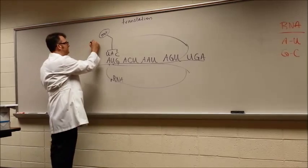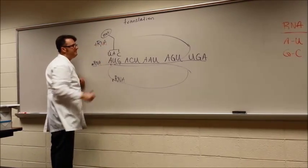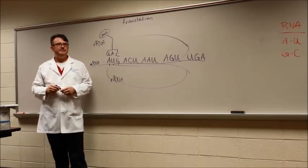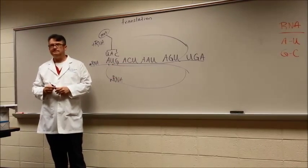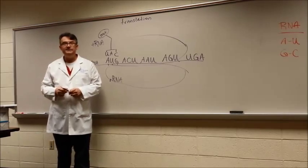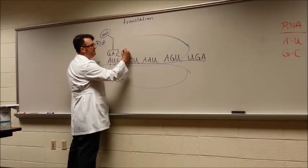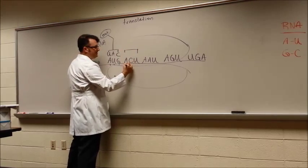This is a transfer RNA. Now find ACU on your chart and tell me the amino acid this codes for. Threonine. Right, I think that's correct. Help me get the anticodon matched to this codon right here.